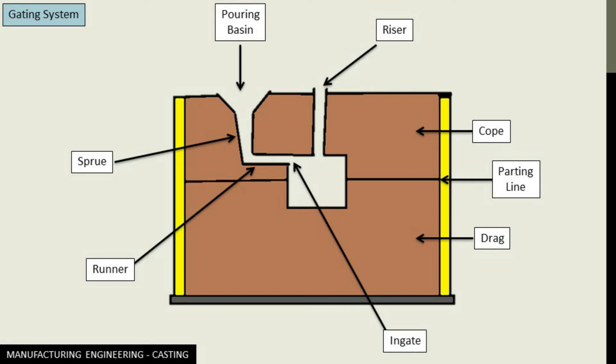Then we have the ingate, which is eventually the entry point of the molten metal to the cavity. Next is the riser, which is in fact the reservoir, the standby reservoir which fights or basically counters the shrinkage allowance, the pattern allowances and all.